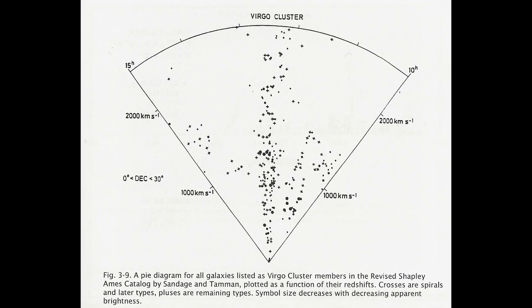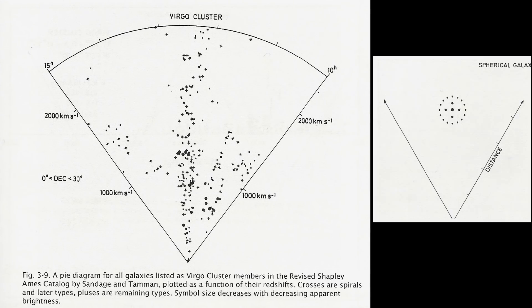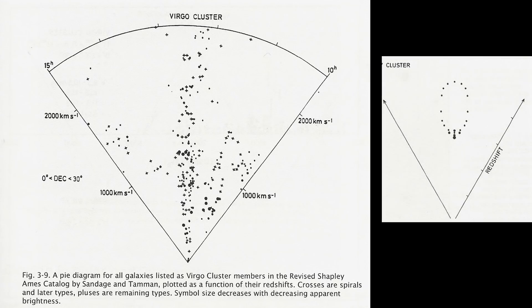Now if we plot the galaxies in the Virgo cluster as a function of their redshift then we end up with the following diagram which is often referred to as the finger of God pointing directly at us. But this of course assumes that redshift is a direct measurement of distance. And again you will see comparing it to the first diagram to the second diagram that we looked at when we looked at just a single galaxy that this distorted view creates this finger of God.